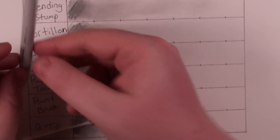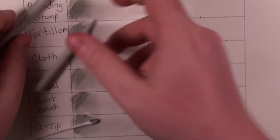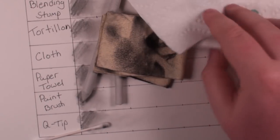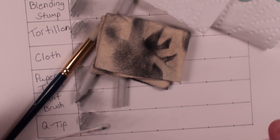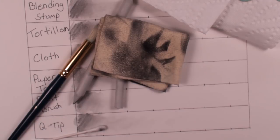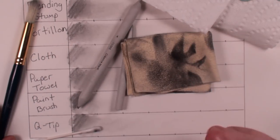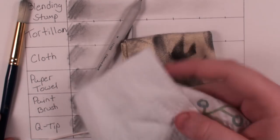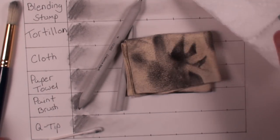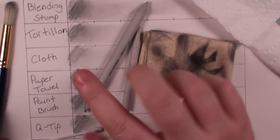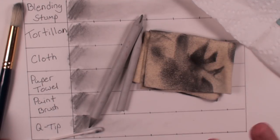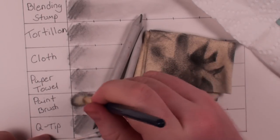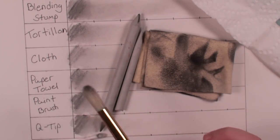So all right, so out of all these: q-tip, blending stump, tortillion, the cloth, paper towel, and of course the paintbrush, these are just a few of the materials that I picked out for demonstrating this blending tutorial. There are a few more out there. You can use different textures of a cloth or paper towel and get different sort of textures. But all in all, to be honest, I will mainly only use a blending stump and maybe a cloth. That's pretty much it. I haven't found too much use for a paintbrush but it does work. It definitely does blend stuff but it's not really the best tool that I've ever used.